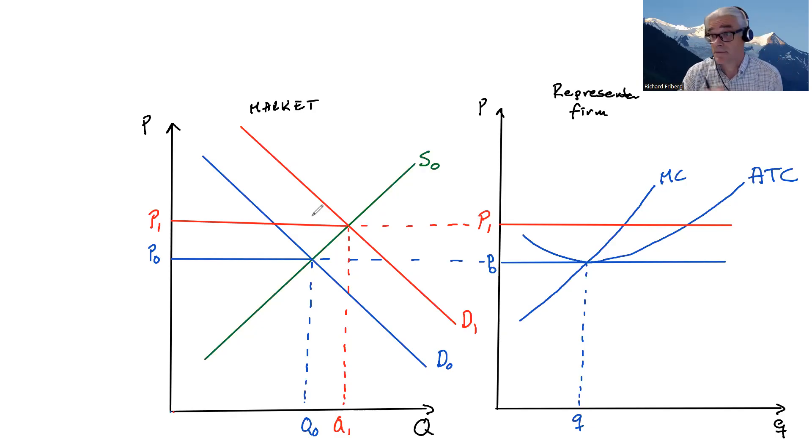What does it do? Well, we know that its supply curve is its marginal cost curve. So it expands quantities to here, Q1. So in response to this higher price, the firm produces more.